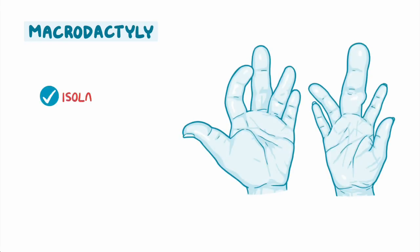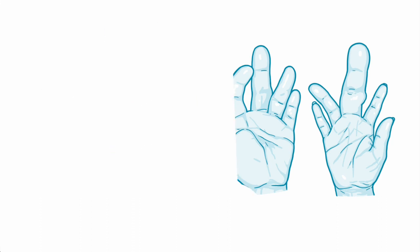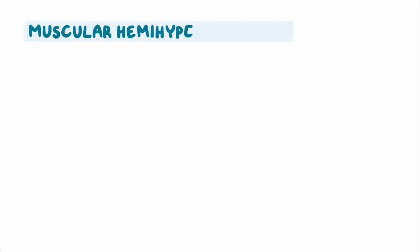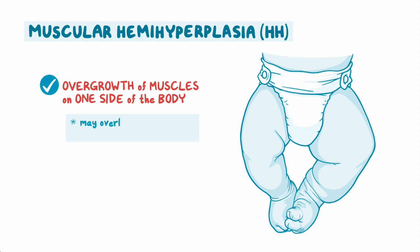Macrodactyly is isolated enlargement of a digit or digits due to overgrowth of bone and soft tissue, which can be painful and reduce mobility or dexterity. Muscular hemihyperplasia, or HH, causes an overgrowth of muscles on one side of the body, so may overlap with HHML, FAH, and macrodactyly.